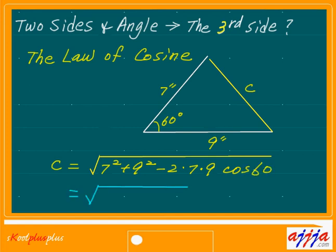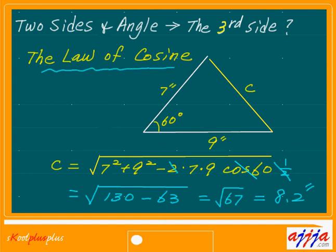Very simple. This time, what is cosine 60? That's exactly half. That's half right there. So what is half and 2 is going to be gone. Just like this. 7 times 9, 63. So what about this one? 49 and 81, which is 130 minus 63. Which is square root of 67, which is about almost 8 point maybe 2. So inches. Okay, remember this cosine law.